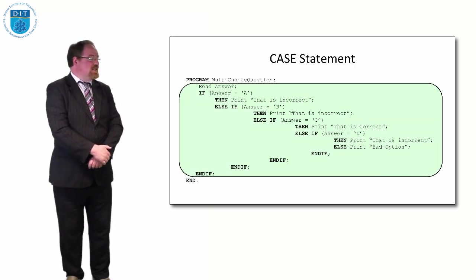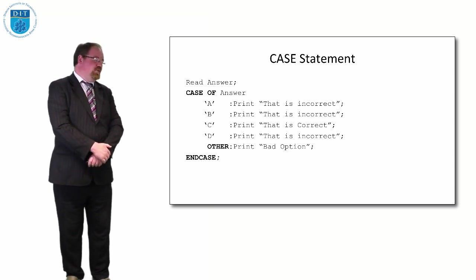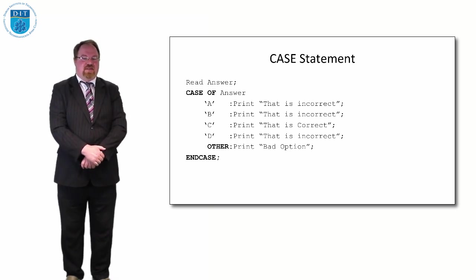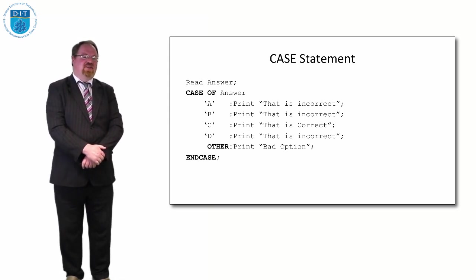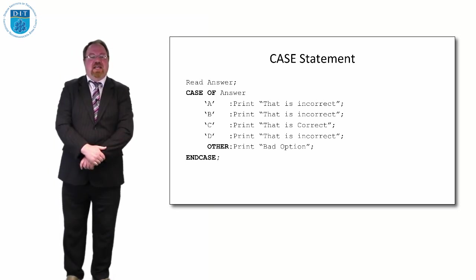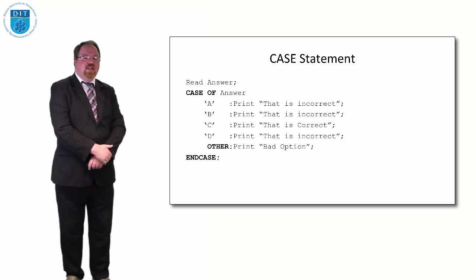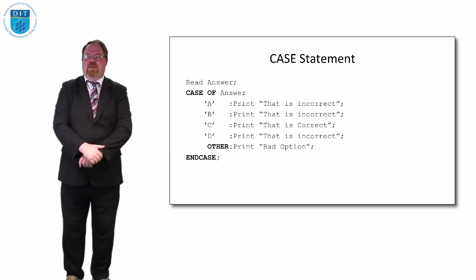We can have a CASE statement, and the equivalent to what we've just seen is: CASE OF answer, A print this is incorrect, B print this is incorrect, C print this is correct, D print this is incorrect, and OTHER. If they type in anything other than A, B, C, or D, we catch that in a good universal design kind of way and say it's a bad option.